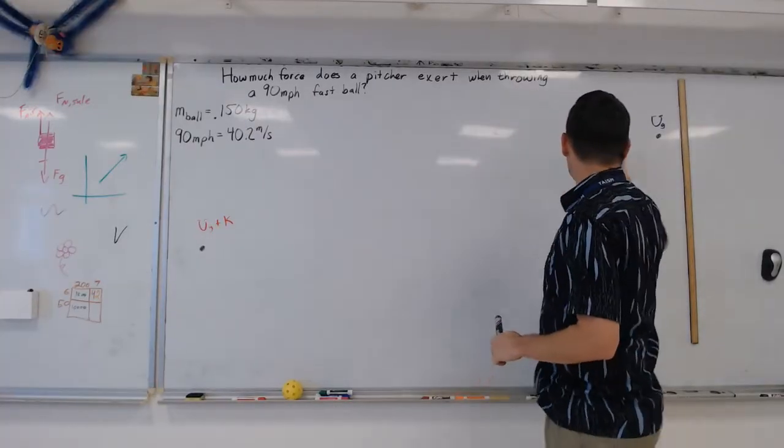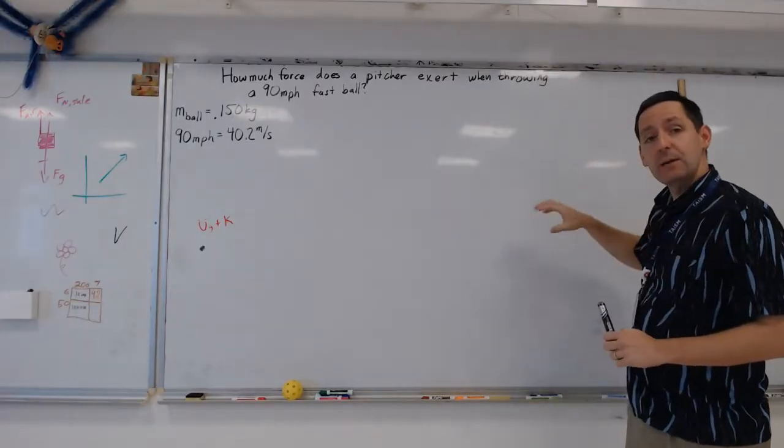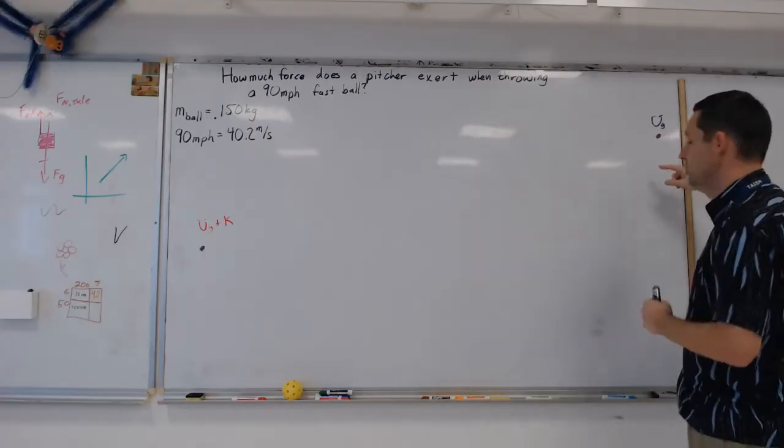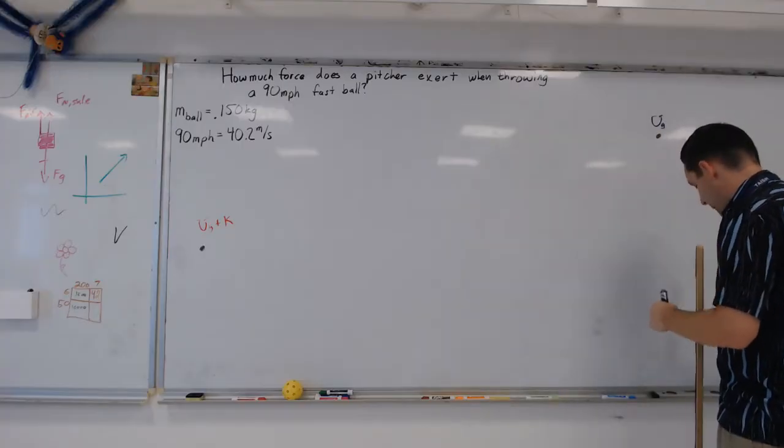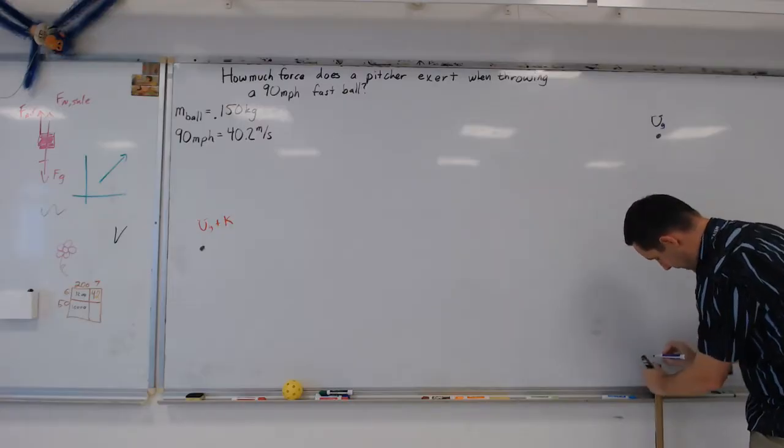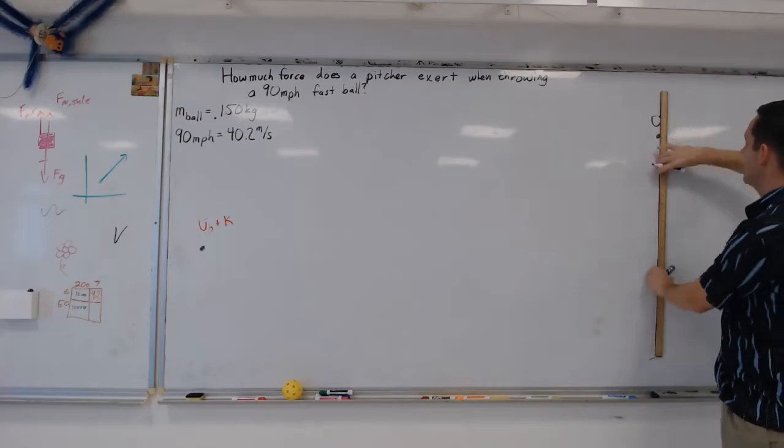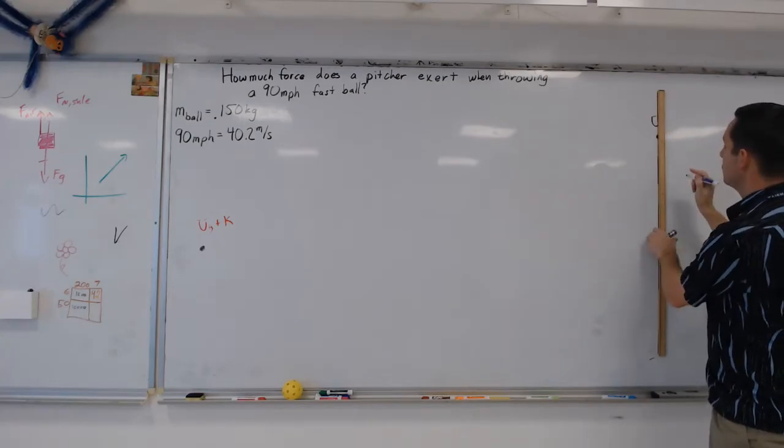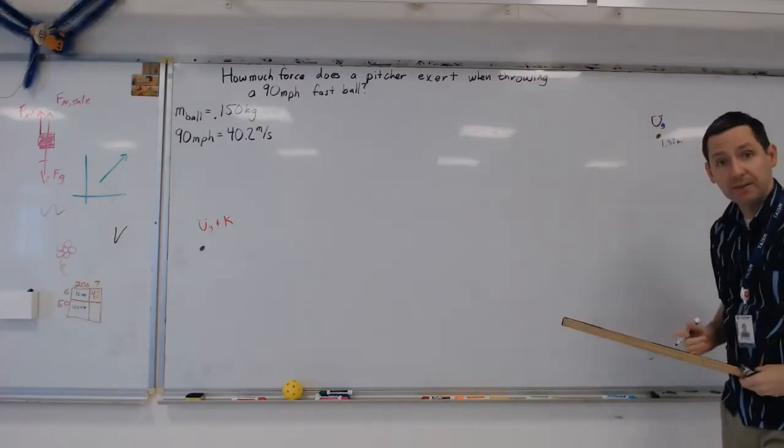Here we have gravitational potential energy, so that is going to be based purely off of MGH. At this point, I do need to measure how high that is. I can go from the ground. Here is one meter right here. Then I measure from that one meter up to the ball. That is all the way up to 82. So this is 1.82 meters up in the air.